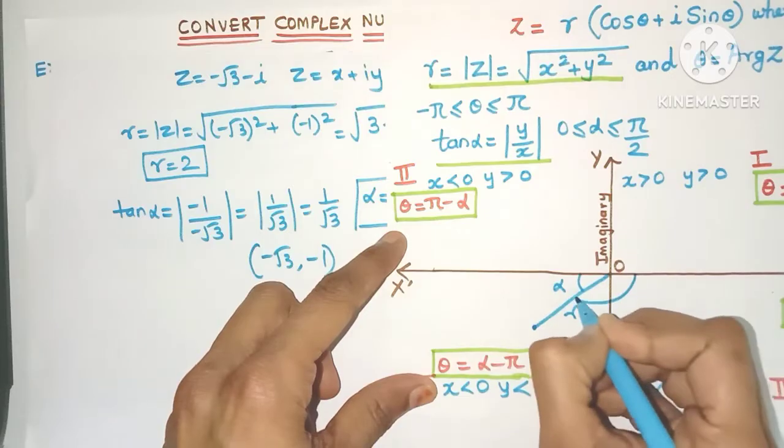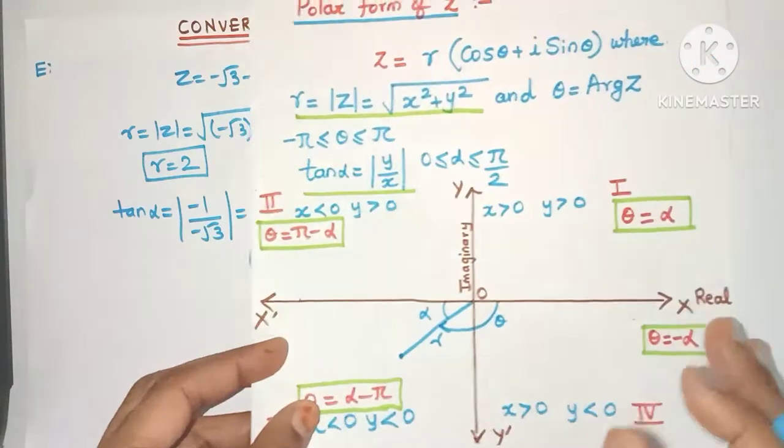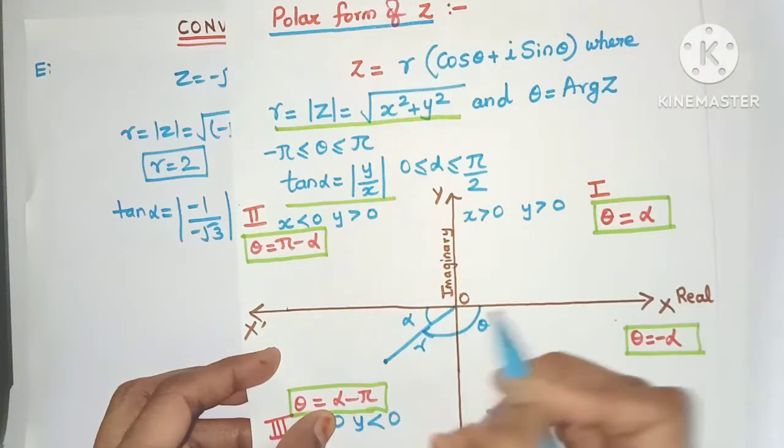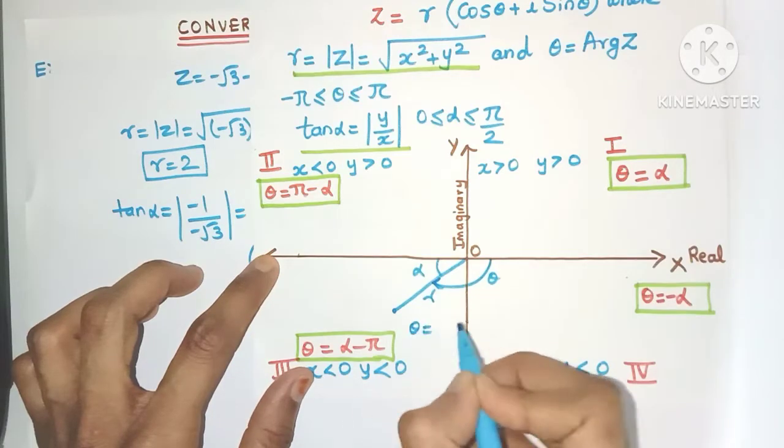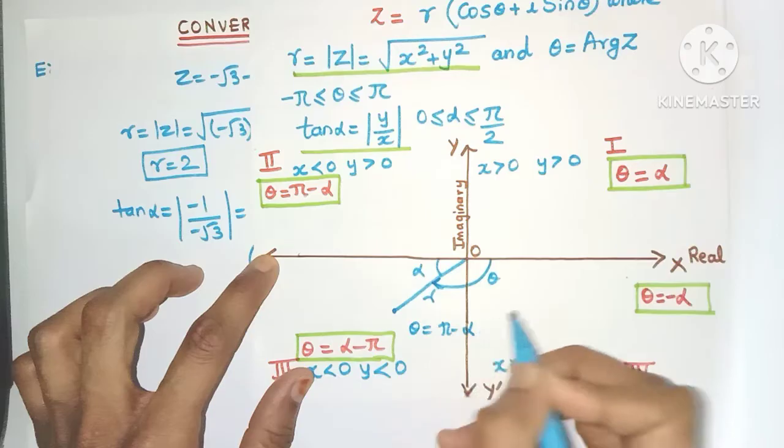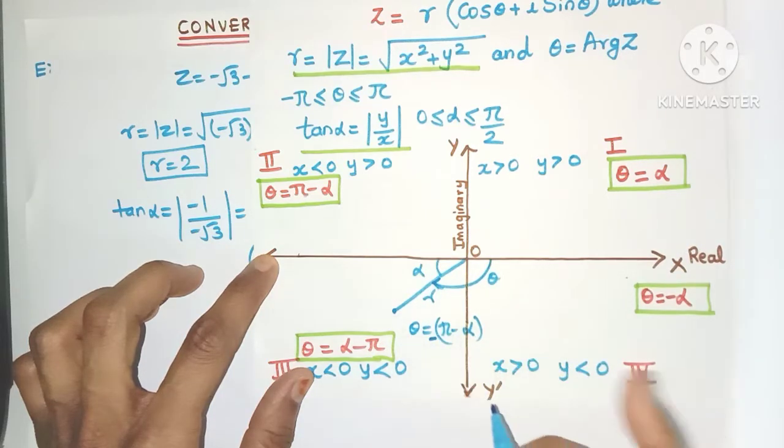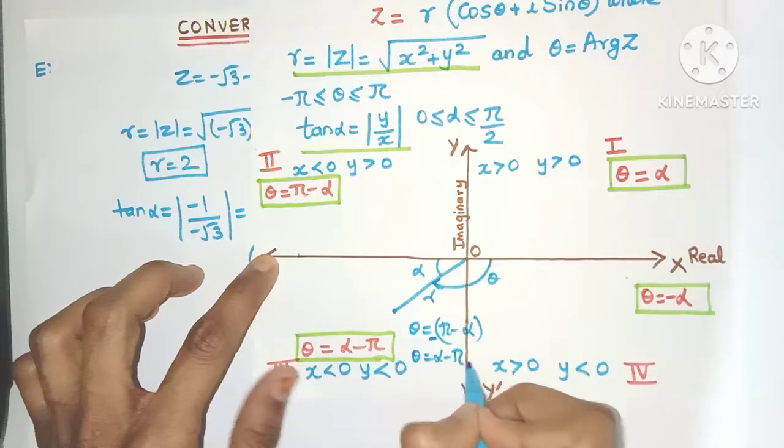Well theta is this angle. See it is always measured from the positive side of the x axis. This is my theta. So theta will be π - α, but because it's clockwise direction it will be negative. So theta will be α - π.